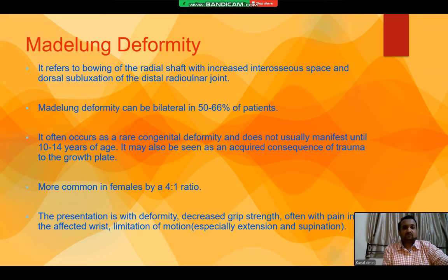It may also be seen as an acquired consequence of trauma to the growth plate. It is more common in females by a 4 to 1 ratio and presents with a deformity, decreased grip strength, often with pain in the affected wrist and limitation in motion, especially in extension and supination.